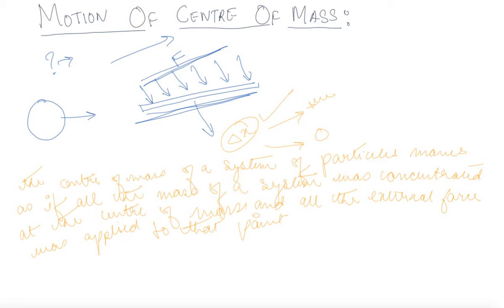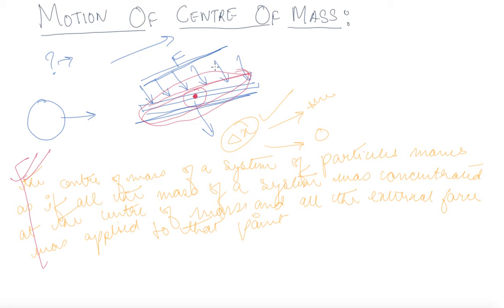Let's understand what this definition is actually saying. This is a rod; we know the center of mass lies at the middle point. All the mass of the rod can be concentrated as one point object — that is the main function of center of mass. We can consider the whole rod to be one point mass M, and the force F distributed uniformly over the rod can be applied to that point mass.